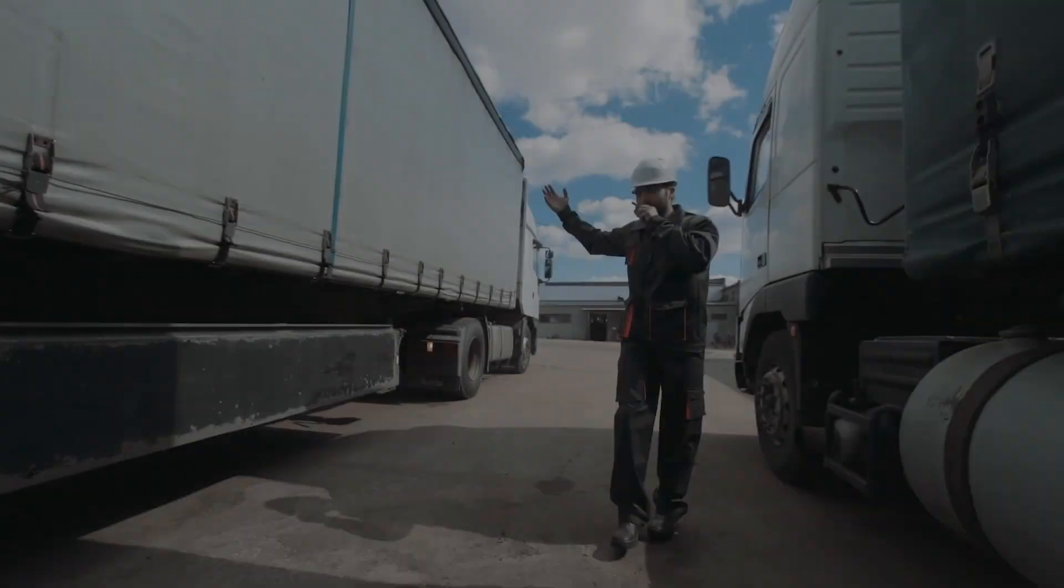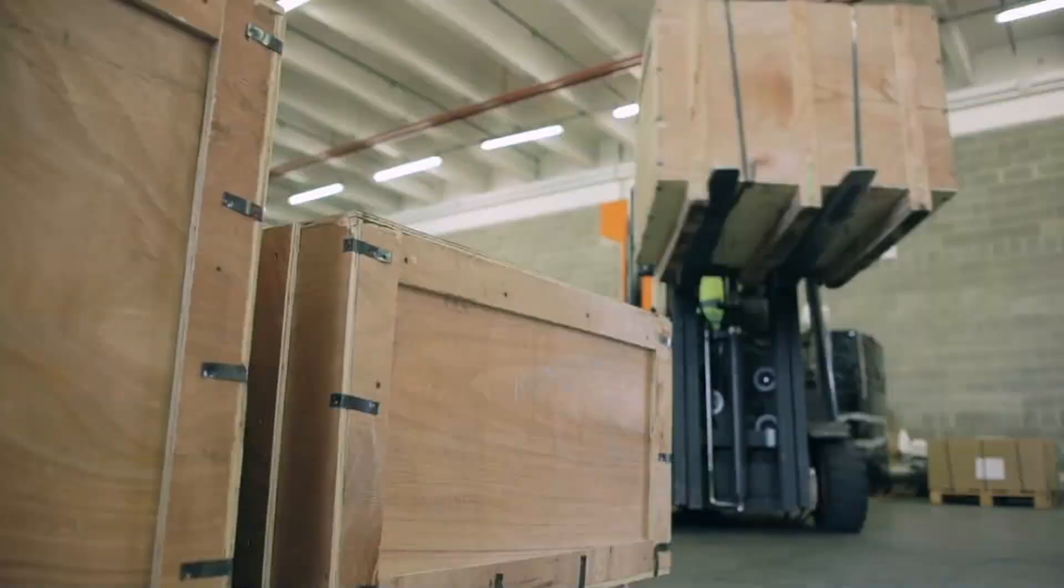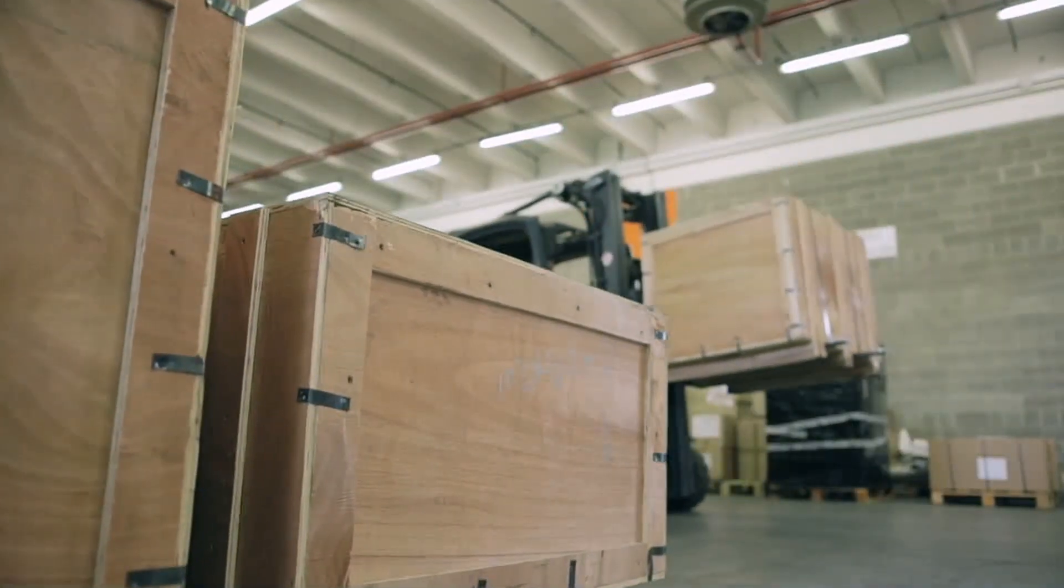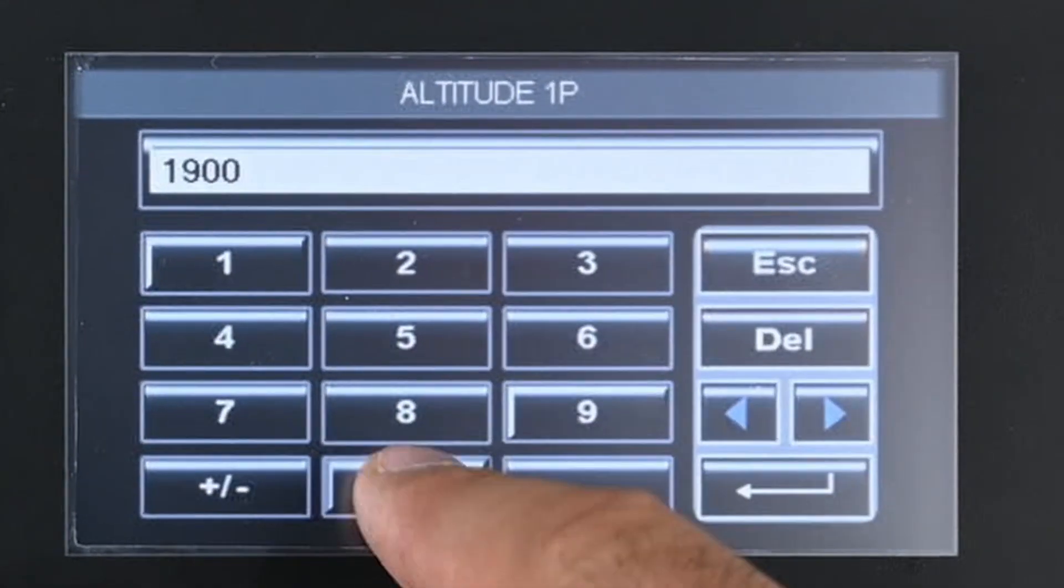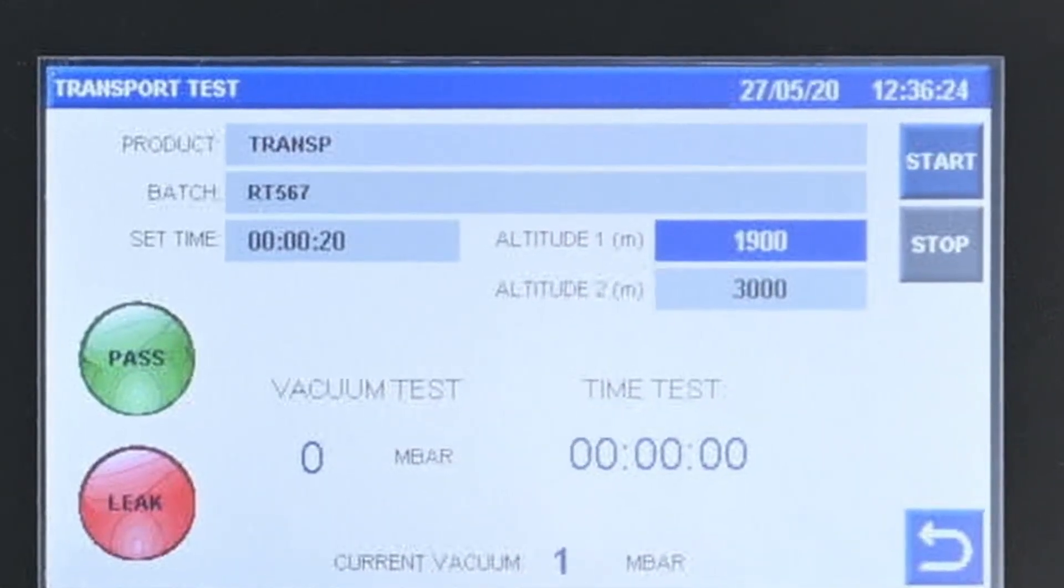Transportation Test will simulate the effects caused by changes in altitude during transportation of packages. Orion will automatically calculate the vacuum level necessary by entering the altitude of the destination and the location of packaging.